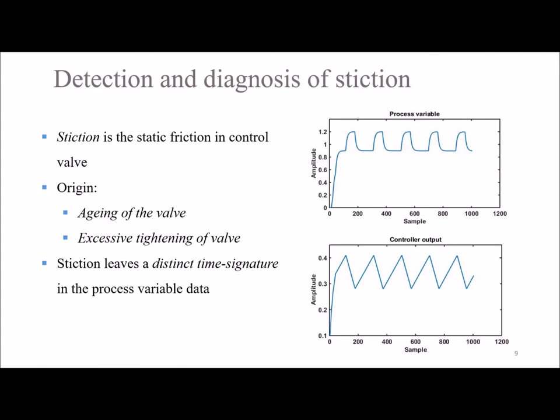The next aspect I work on is detecting stiction in a control valve. Stiction is basically static friction in a control valve which results in sticking of the valve. Stiction exists in control valves due to aging, which may be due to activation of the metal sliding surface.